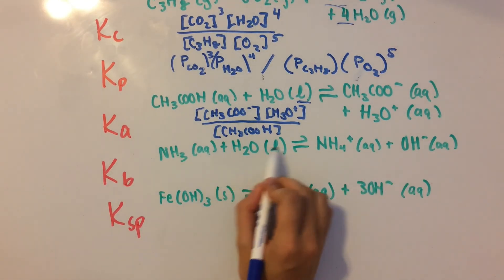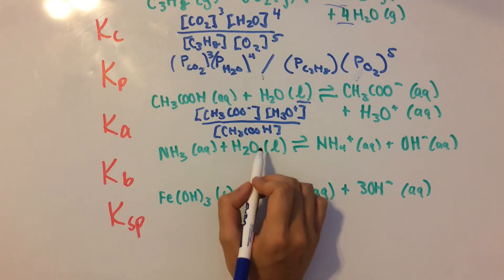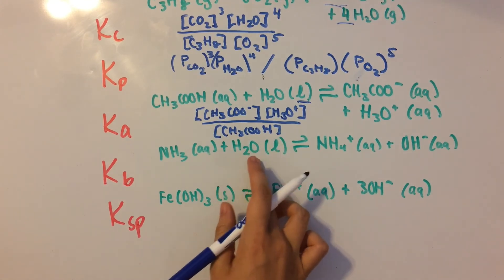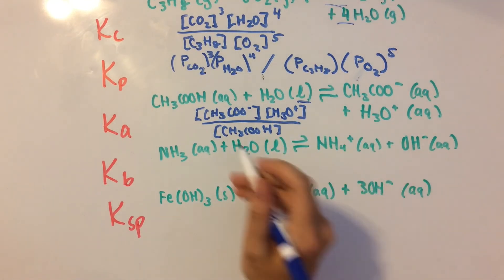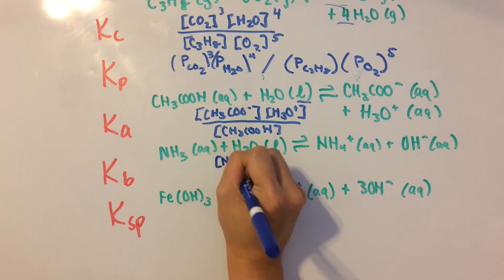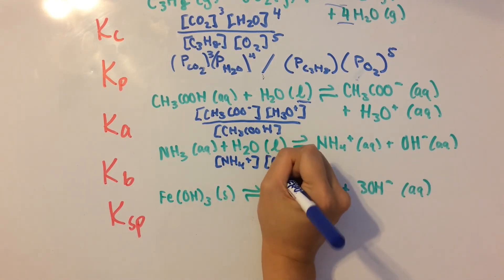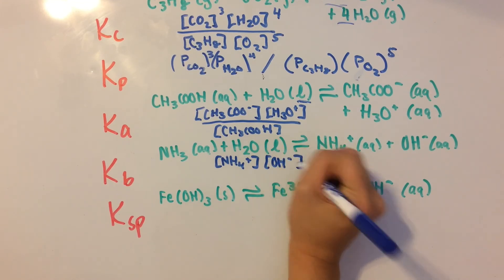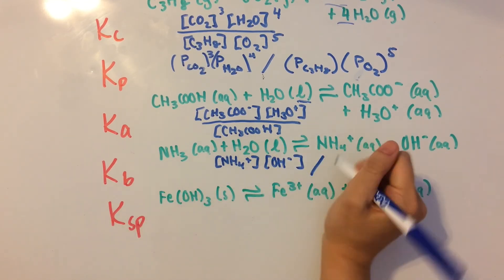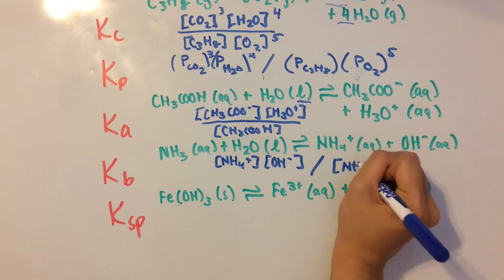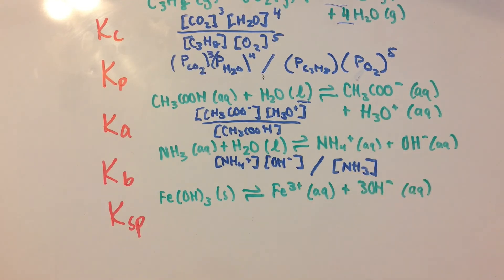So let's move on. We're not going to put the H2O in the expression, so we're just going to leave it there. So we have NH4+ times concentration of OH-, over concentration of NH3. Pretty easy.